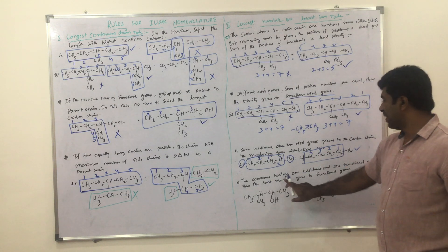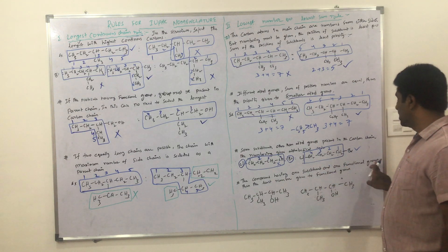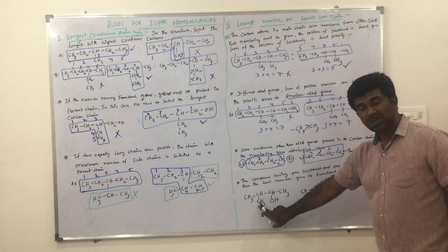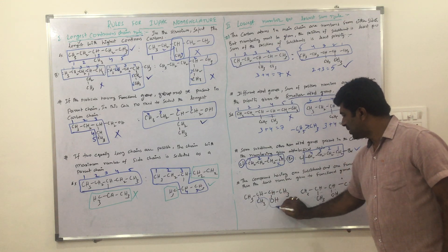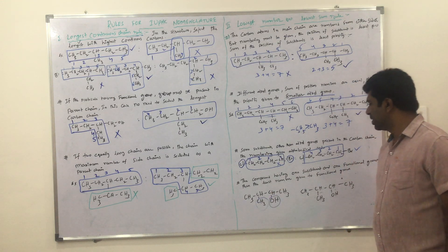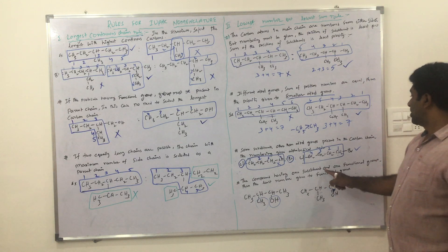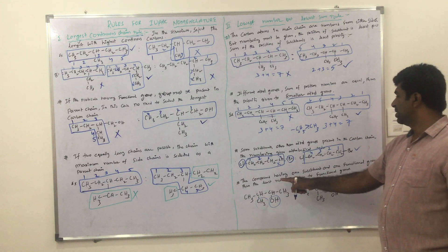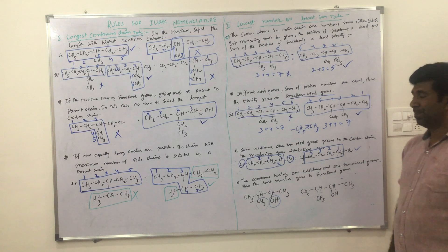Next, a compound having one substituent and one functional group. Here, see — this is the substituent and this is the functional group, the OH functional group. When one substituent and a functional group are present, the least number is given to the functional group.